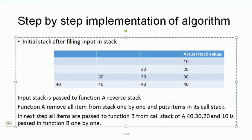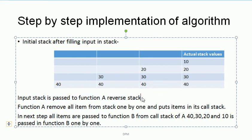So first I have a simple input stack: 10, 20, 30 and 40. The input stack items are passed to the reverse stack function. Function A removes all items from the stack one by one until the stack becomes empty, keeping the items in its call stack. After that, all items are taken one by one from the call stack of A — first 40, 30, 20 and 10 — and passed to Function B.